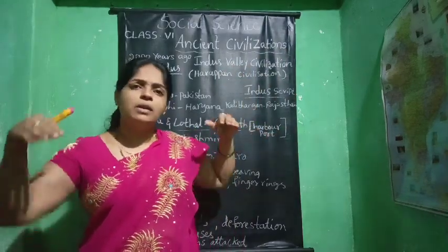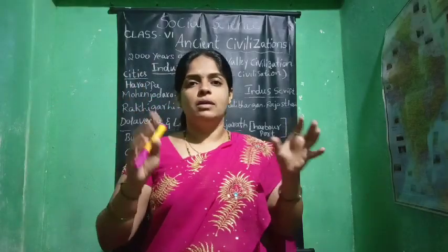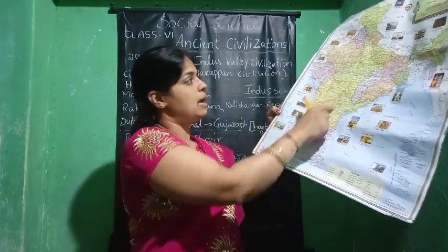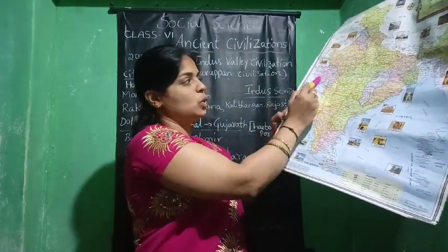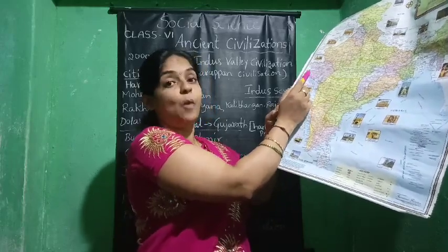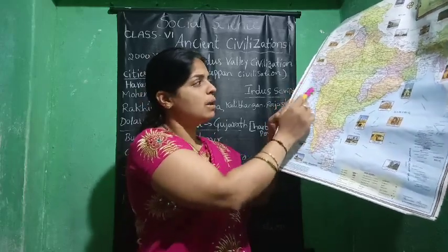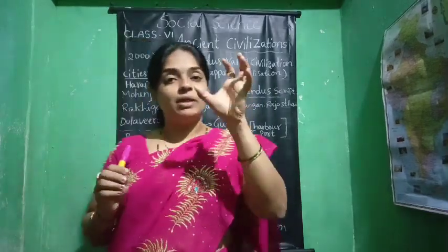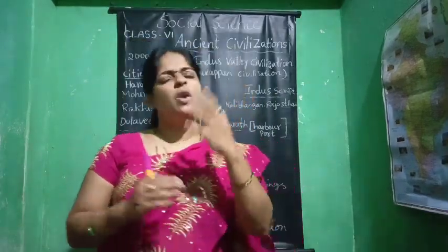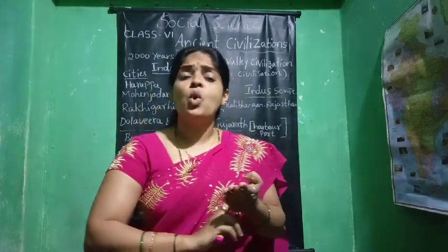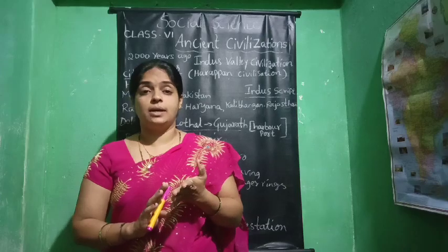Through the Arabian Sea, they were moving to the Mesopotamian region as well as Africa. So they were having the trade link. Well-known economic conditions during this time. From Gujarat's Lothal, through the Arabian Sea, they had harbour ports and trading links with Mesopotamia and Egypt. They gave more importance to agriculture.